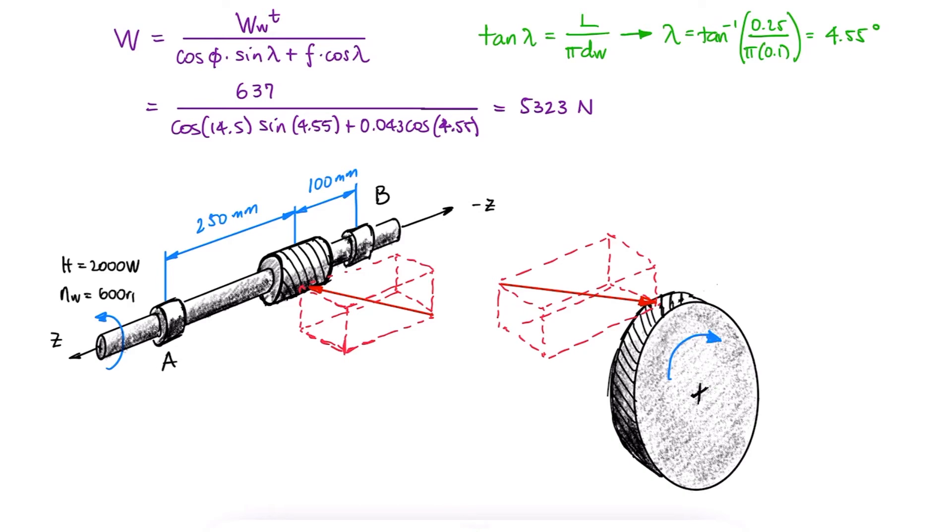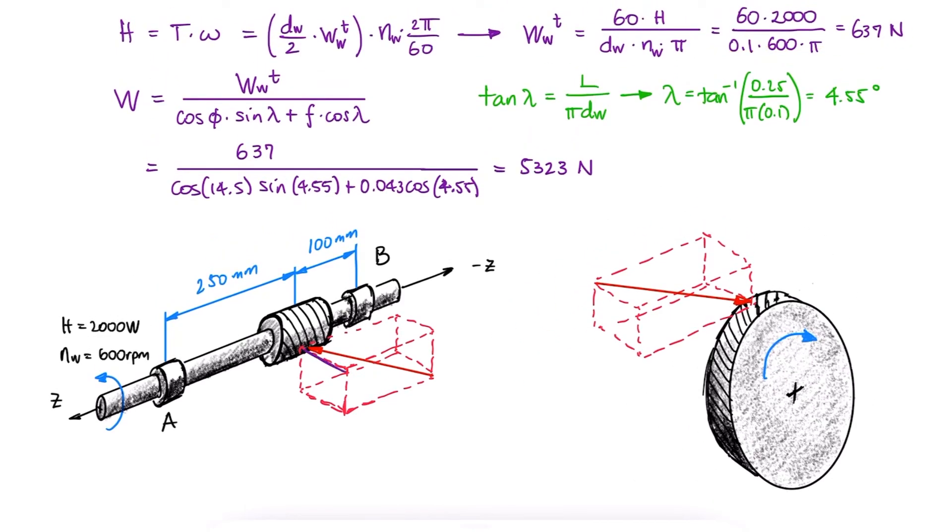So to sum up what we did till this point, with the power and speed information, we found the tangential component of that force, tangential for the worm, and with it the overall force W.